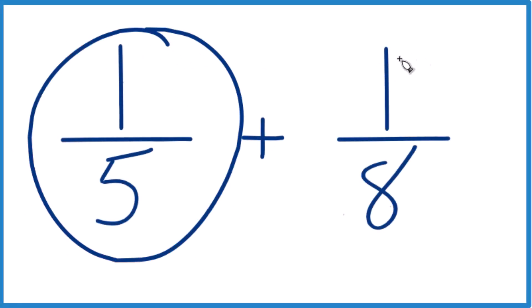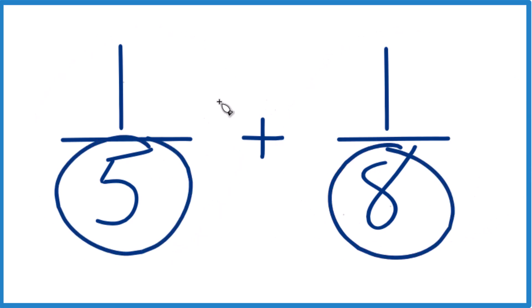If you need to add one-fifth plus one-eighth, here's how you do it. What we need to do is find a common denominator here. Because if the denominators are the same, we just add the numerators and we're done. So let's do this.